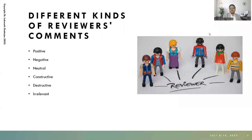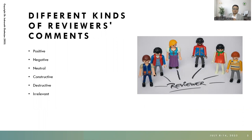Let us understand what are the different kinds of reviewer comments. There are different kinds of comments — whenever we get some responses or questions from reviewers, they come in different ways. As beginners, we might think those comments are very plain or motivating, but actually they can be classified into different parts: positive comments, negative comments, neutral comments, constructive comments, destructive comments, and irrelevant comments.